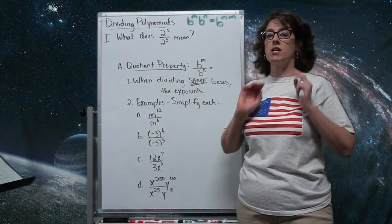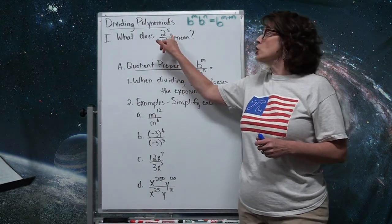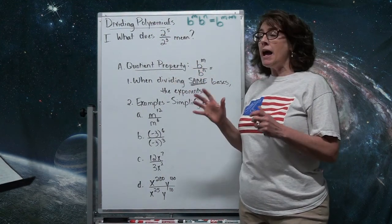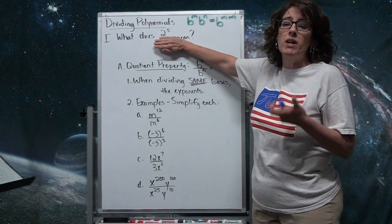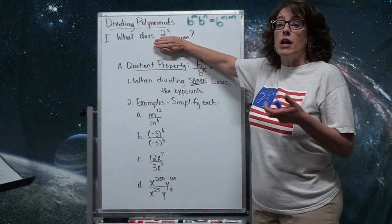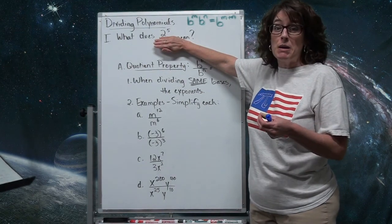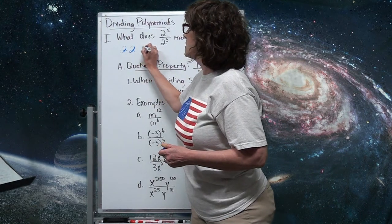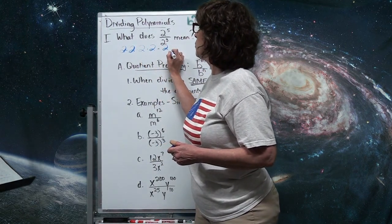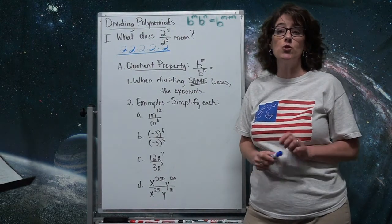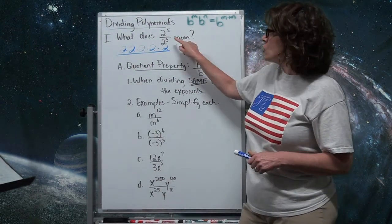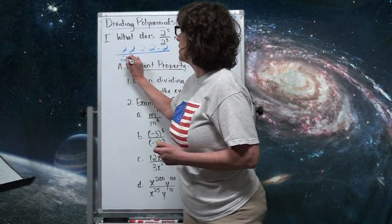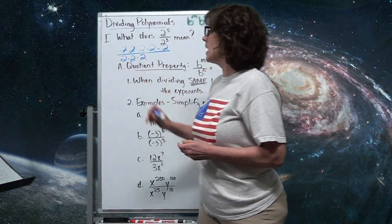Now let's take a look at a different scenario. What does 2 to the 5th divided by 2 to the 3rd mean? The numerator 2 to the 5th means five 2s being multiplied together: 2 × 2 × 2 × 2 × 2. And 2 to the 3rd in the denominator indicates three 2s being multiplied: 2 × 2 × 2.